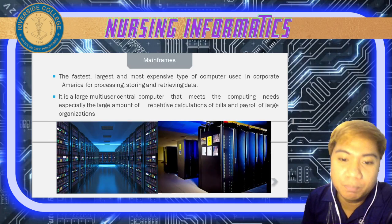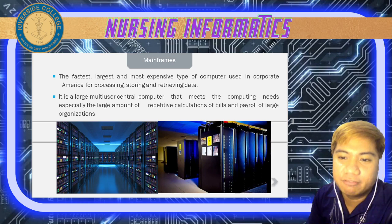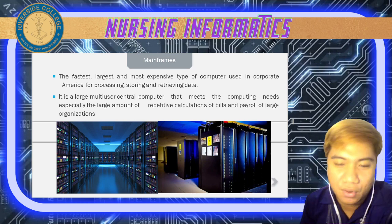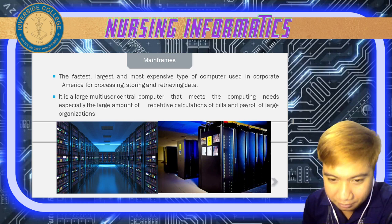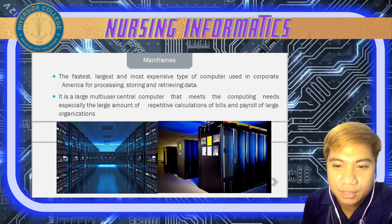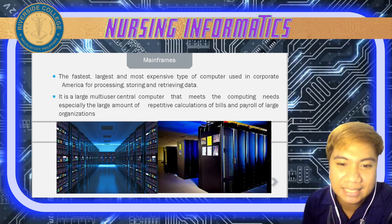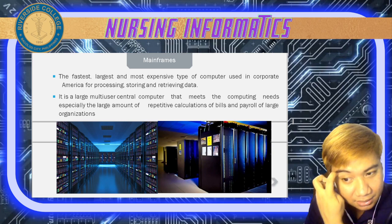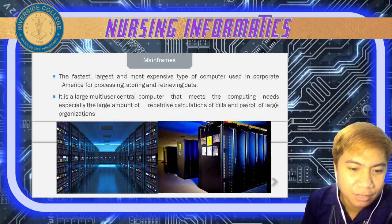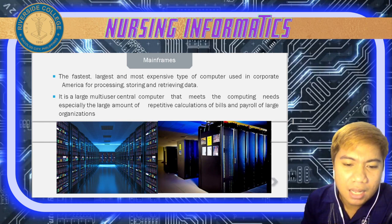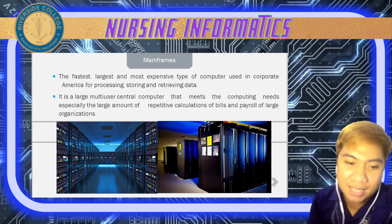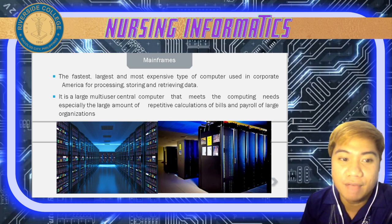Next we have mainframe computers — the fastest, largest, and most expensive type of computer used in corporate America for processing, storing, and retrieving data. It is a large multi-user central computer that meets computing needs for large amounts of repetitive calculations such as bills and payrolls. Compared to desktops, mainframes have extremely large memory capacity and fast processing time.